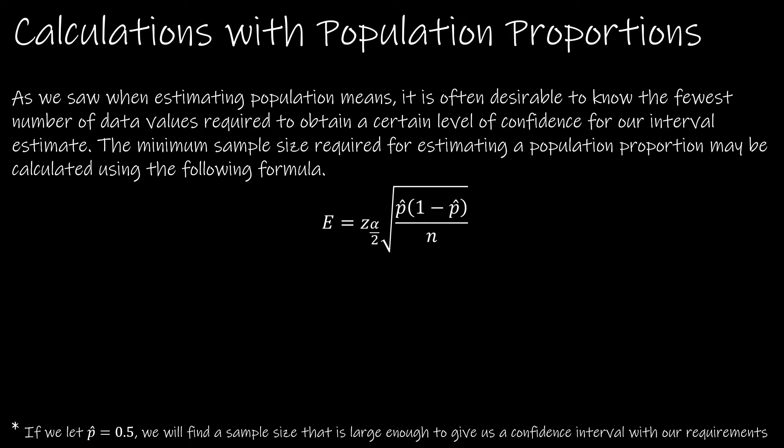Mathematically, we're trying to get n by itself and I can't do that because it's inside the square root bracket. But I don't want to square everything yet. I want to get the square root by itself. So the first thing I'm going to do is take each side divided by z of alpha over 2. That gives me e divided by z of alpha over 2 equals the square root of p hat times 1 minus p hat over n, or you can use q hat instead of 1 minus p hat.